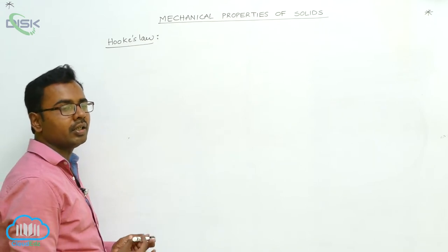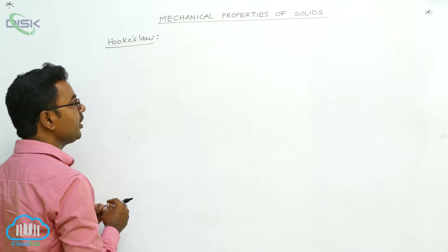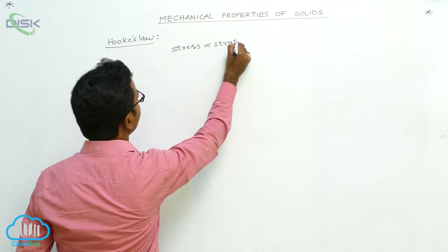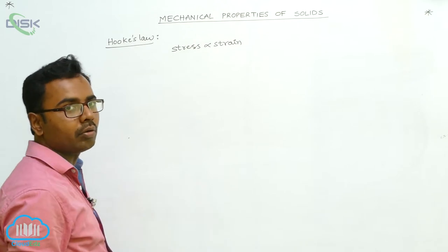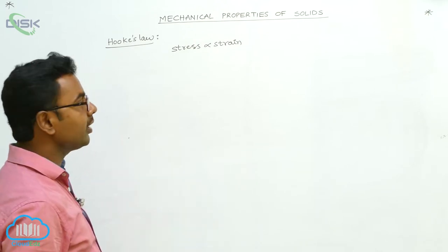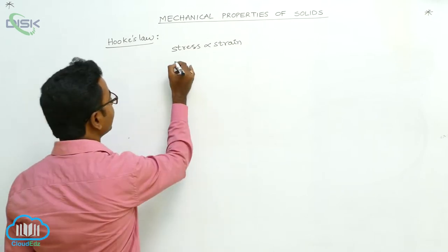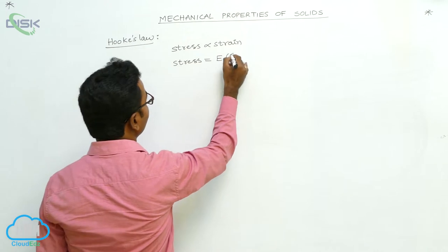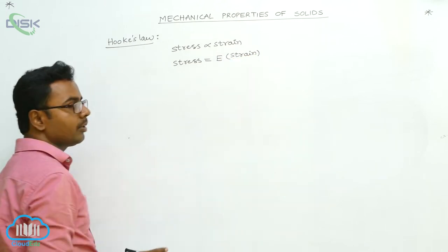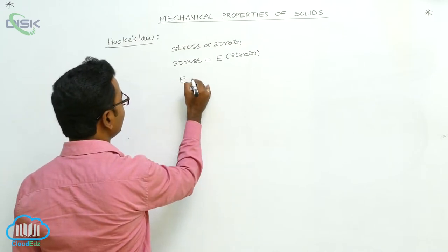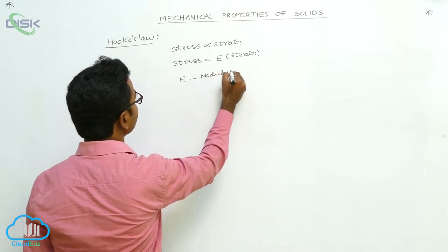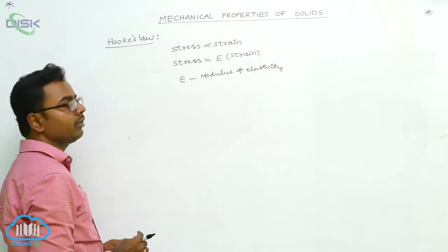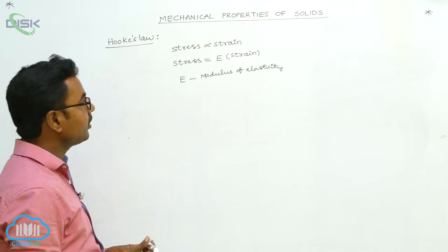Within the elastic limit, stress is directly proportional to strain — as we increase the stress, strain also increases, but only within the elastic limit of the body. So the statement of Hooke's law is: within the elastic limit, stress is directly proportional to strain. We write this as stress equals a proportionality constant E multiplied by strain, where E is called the modulus of elasticity.